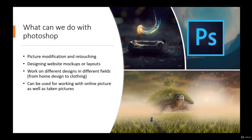So what can we do with Photoshop? As I said, it is really specialized in modification of pictures. The first thing you can do is modify or retouch a picture — it could be a picture you imported from the internet or a picture you have taken yourself. You can add elements to a picture, delete elements from a picture, delete someone from a picture, or add someone to a picture. Modifying or retouching a picture is one of the most important uses.